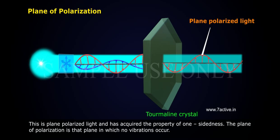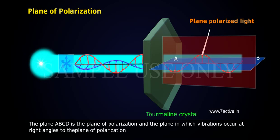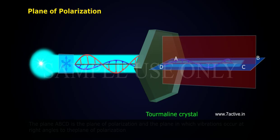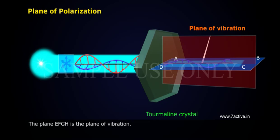The plane of polarization is that plane in which no vibrations occur. The plane A, B, C, D is a plane of polarization and the plane in which vibrations occur is known as plane of vibration. The plane E, F, G, H is a plane of vibration.